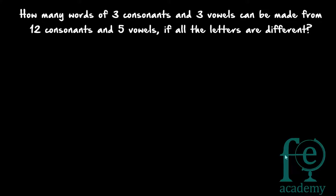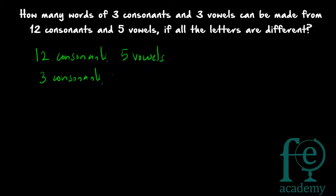Hi friends, welcome to today's class. So today's question is: how many words of 3 consonants and 3 vowels can be made from 12 consonants and 5 vowels if all the letters are different? You are given 12 consonants and 5 vowels, and you are asked to find out how many words can be formed such that the formed words will have 3 consonants and 3 vowels.